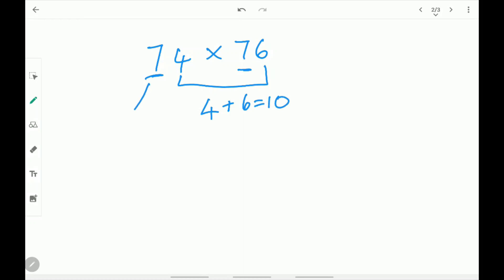First write the first digit. One more than 7 is 8. Now multiply 7 times 8. 7 times 8 is 56. Write 56 over here.